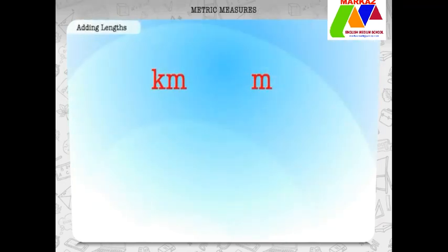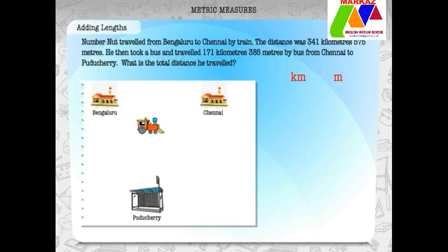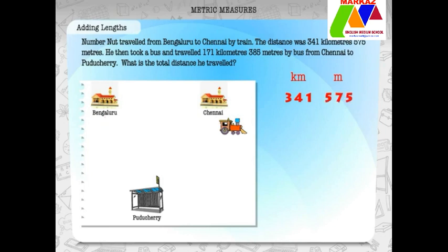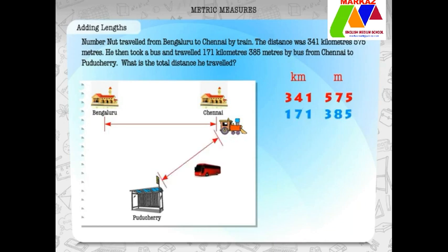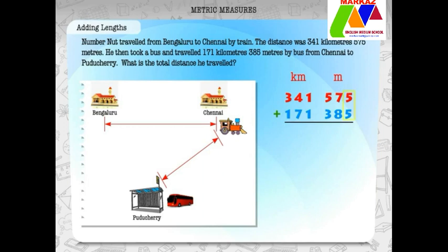Now, when we add distances, what placeholders will we use? Yes, kilometers and meters. Number Nut traveled from Bengaluru to Chennai by train. The distance was 341 kilometers 575 meters. He then took a bus and traveled 171 kilometers 385 meters from Chennai to Puruchiri. What is the total distance he traveled? Here again, we have to perform addition. Adding 341 kilometers 575 meters and 171 kilometers 385 meters, we get 512 kilometers 960 meters.